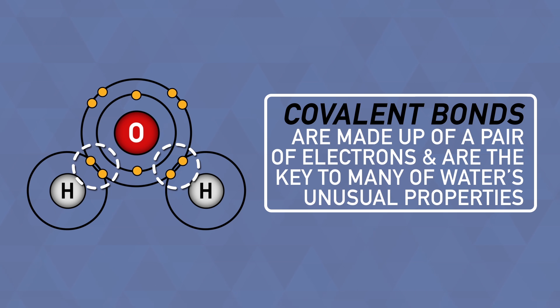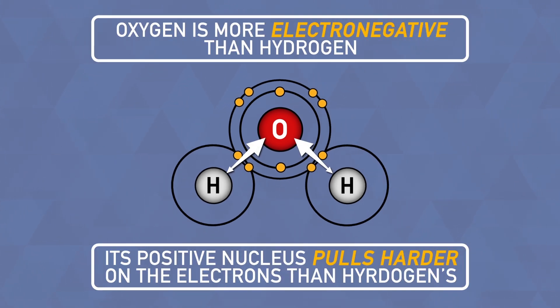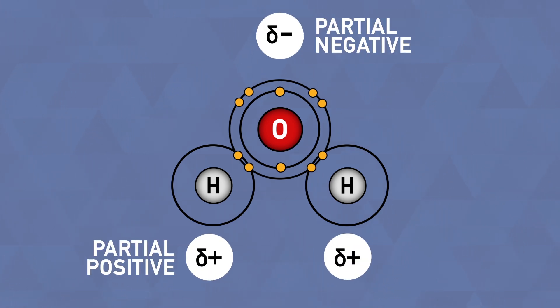These covalent bonds are made up of a pair of electrons and are the key to many of water's unusual properties. Oxygen is more electronegative than hydrogen. This means that its positive nucleus pulls harder on the negative electrons in the covalent bonds than the hydrogen's nucleus. As a result, the oxygen atom develops a partial negative charge, which leaves the hydrogens with a partial positive charge.